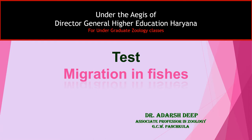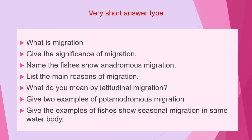The first category of questions are very short answer type, which you have to answer in two to three lines. The first question of this category is: what is migration? You have to write the definition of migration. The second question of this category is: give the significance of migration.